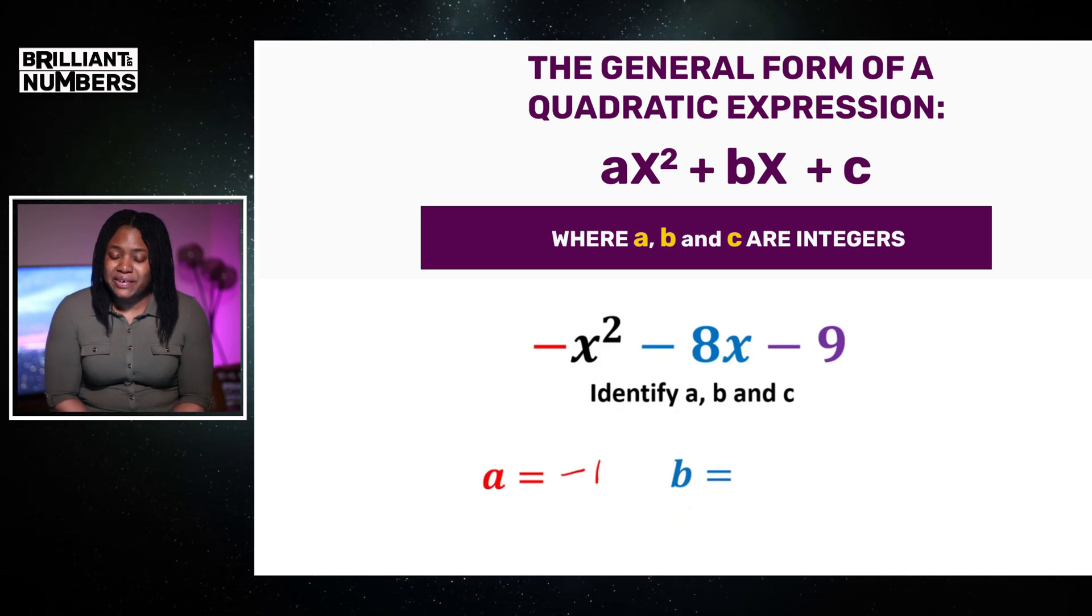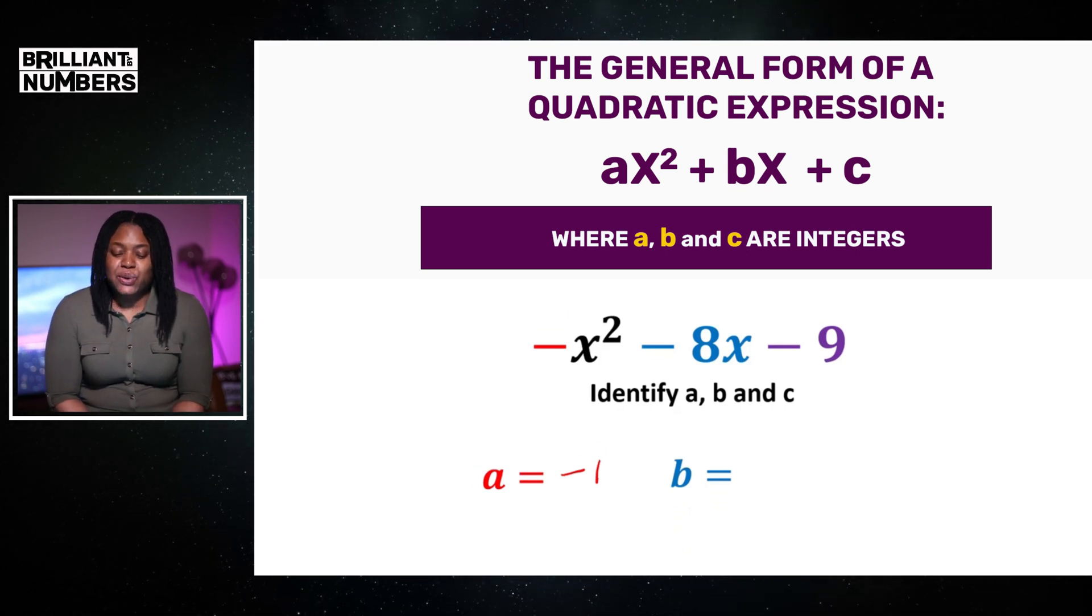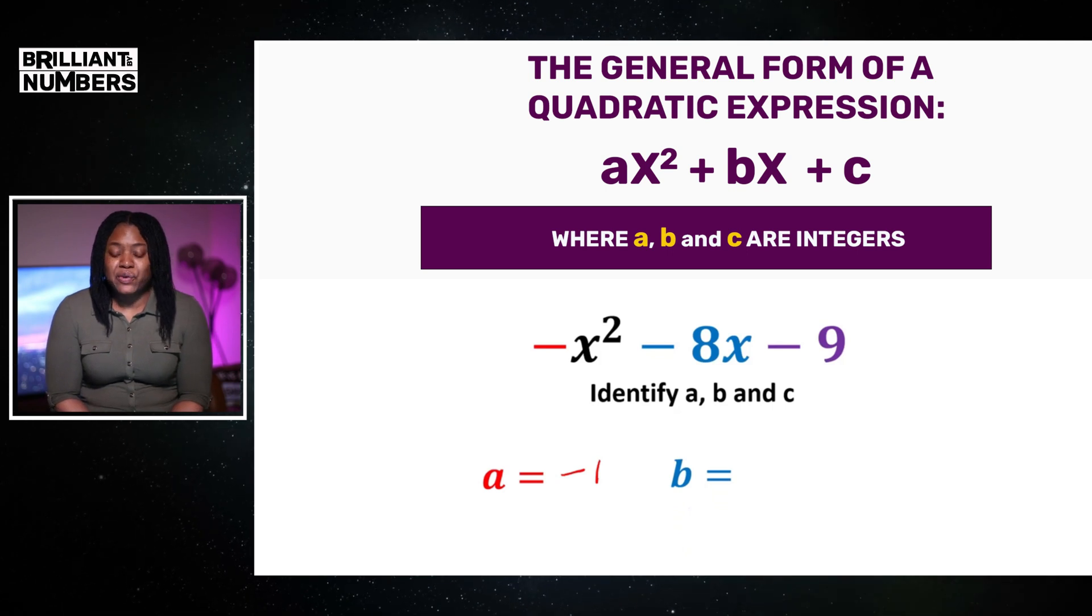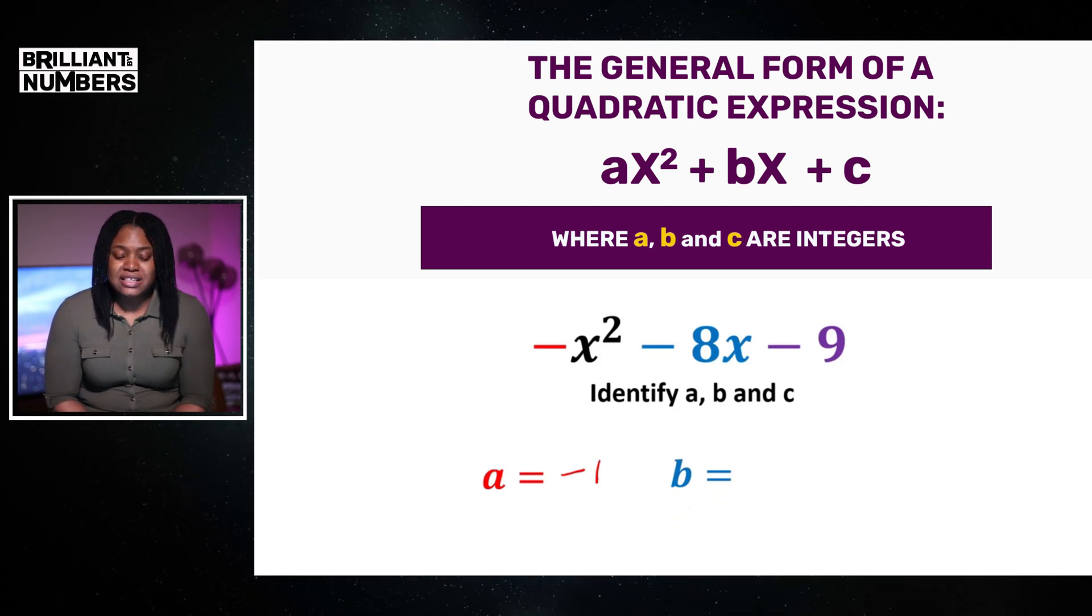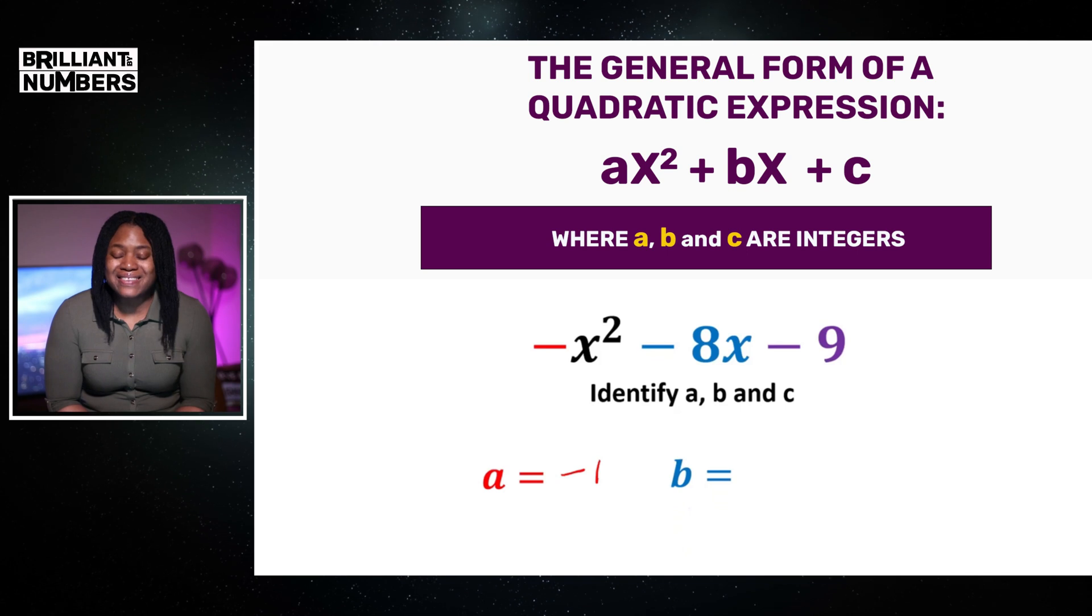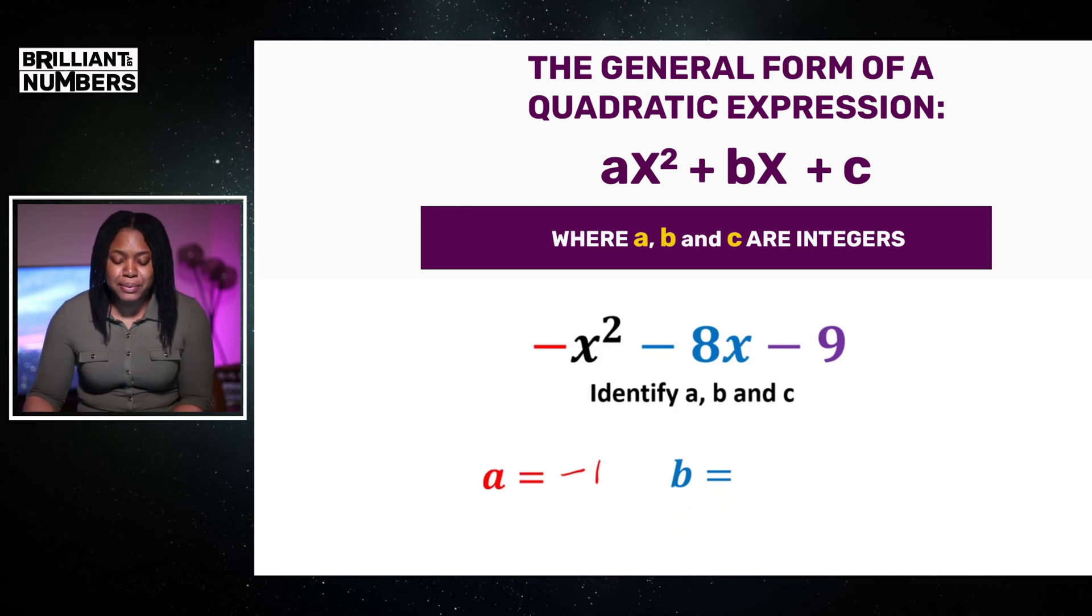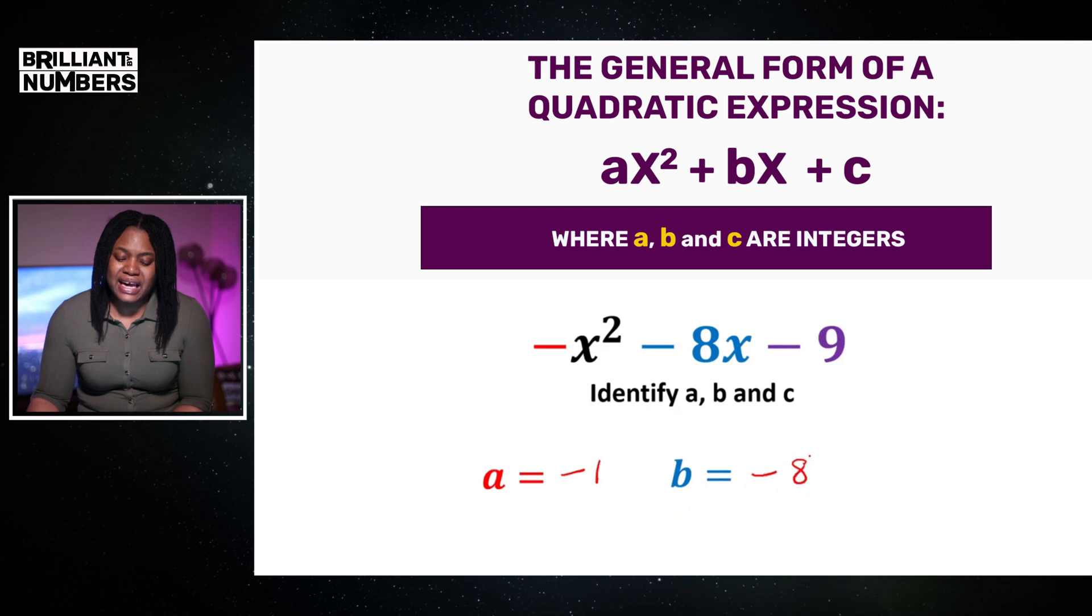b is the coefficient of x. So, minus x is what is seen before 8. Very important to ensure that we understand that the sign goes along with the number. So, b is equal to negative 8.